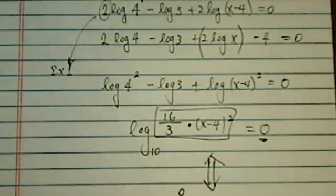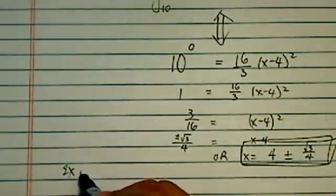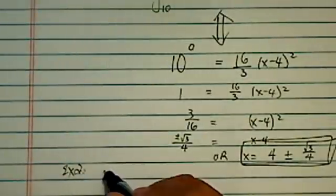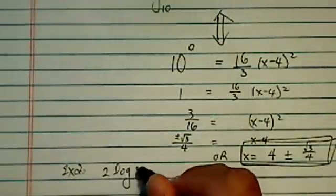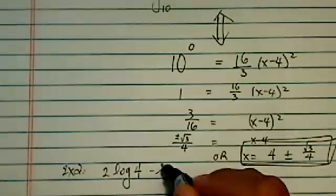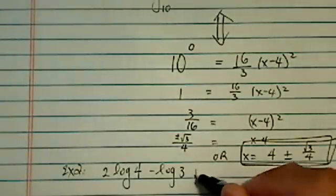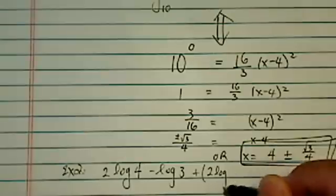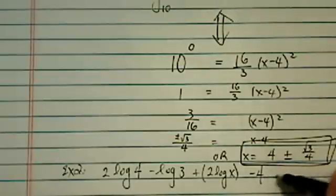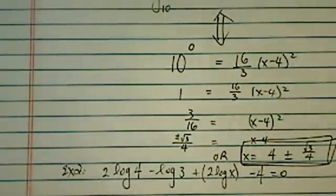Okay, now let's take a look at the second case, what happens if the parentheses is elsewhere. Example 2. 2 log base 4 minus log 10 base 10 of 3 plus twice log of x, and the whole thing minus 4 equal to 0. Now for this case,